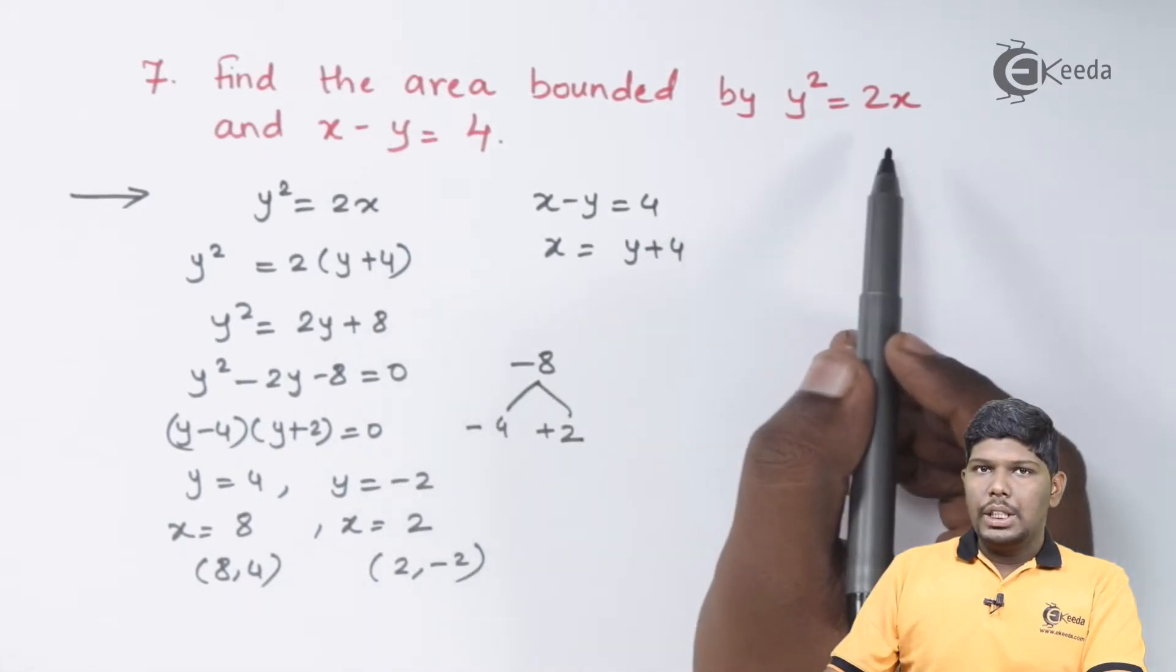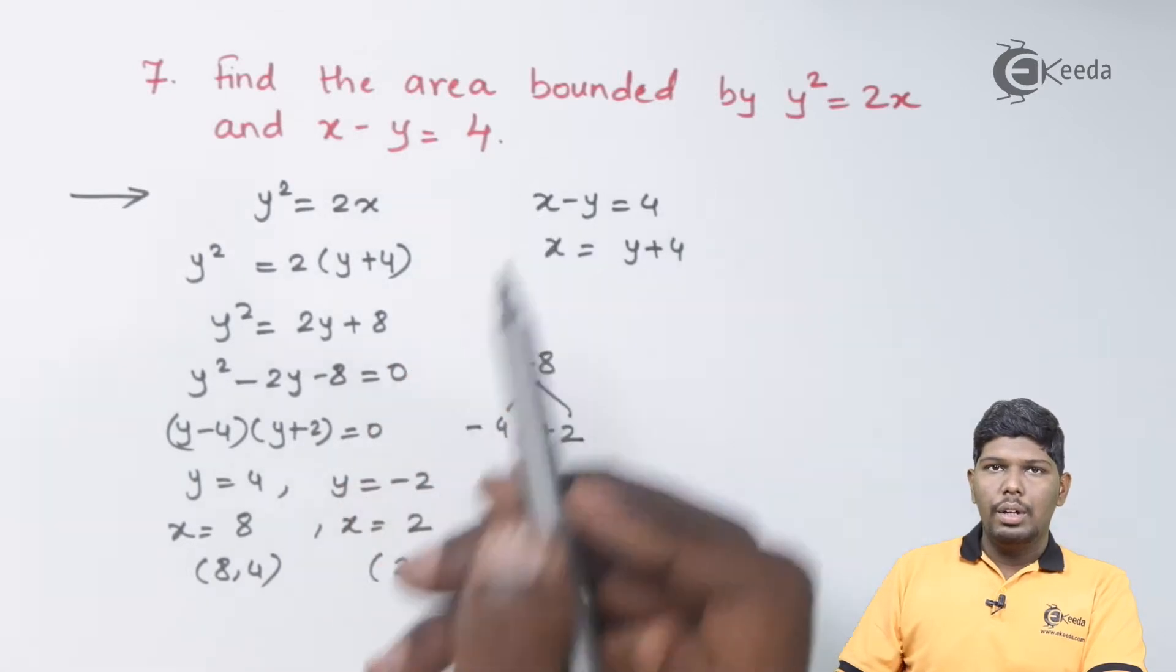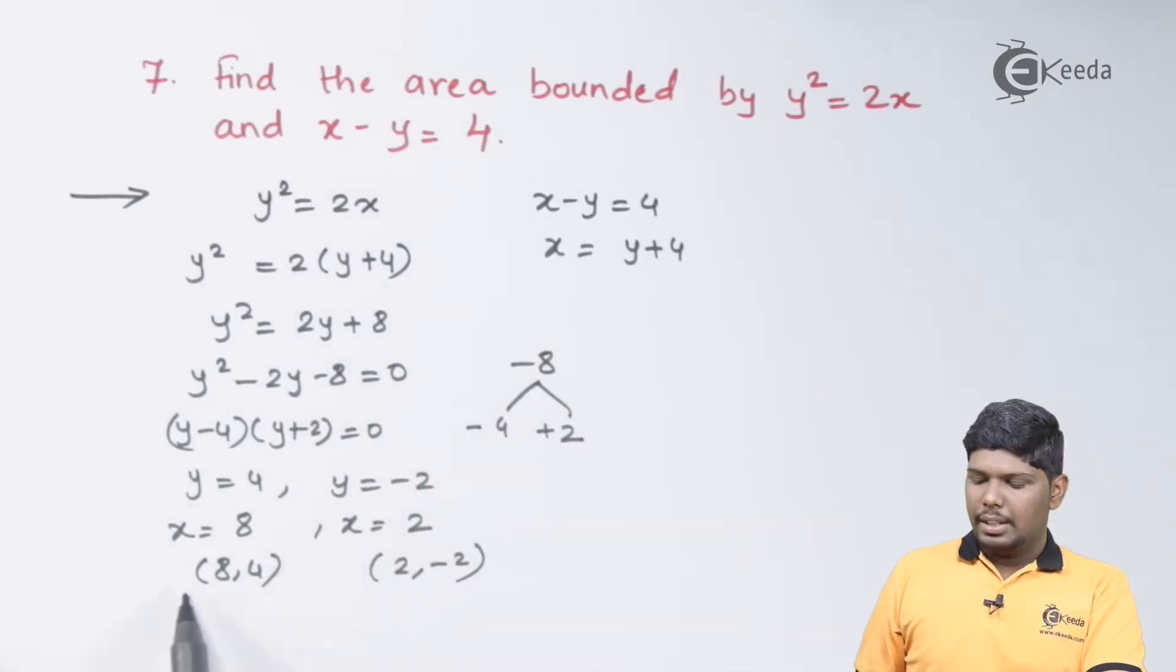Therefore, the parabola y² = 2x and the line x - y = 4 will intersect in these two points: (8, 4) and (2, -2). Now let us draw the graph.